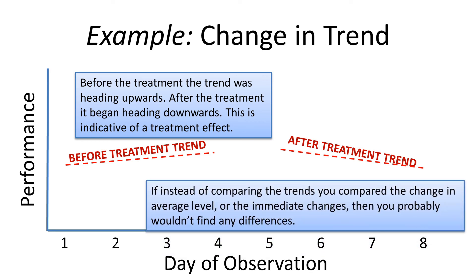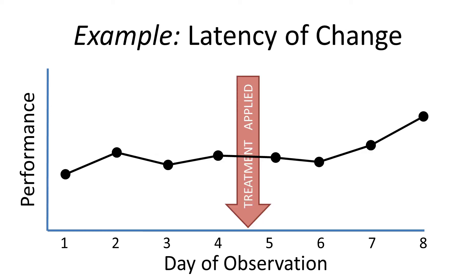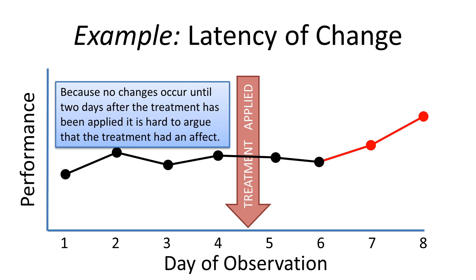The final example illustrates the problem of latency. When you look at this data, it really doesn't seem like the treatment is doing anything. If you have reason to believe your treatment has a delayed effect — like a medicine that takes a while to kick in — you could argue this is compelling evidence. But in general, when there's such a gap between the treatment and signs of its influence, it's just hard to argue. Because no changes occur until about two observations after the treatment, it's hard to argue that the treatment is having any effect at all.